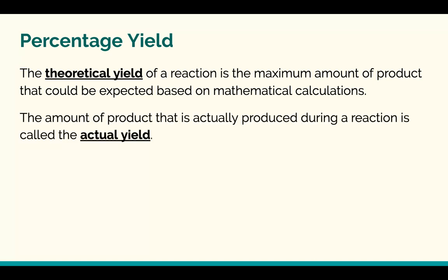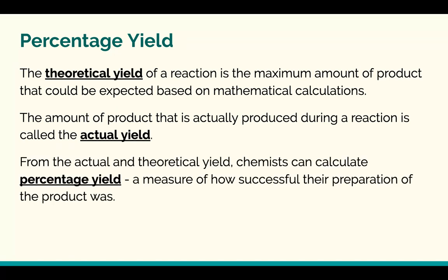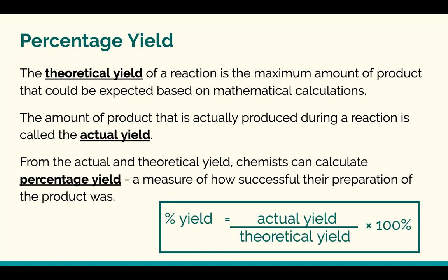Then when you actually do the reaction, you probably are going to get less than that. The amount of product that you actually get is called the actual yield. So from those two yields, you can calculate a percentage yield, which is a measure of how successful the preparation of product was. The formula for percentage yield is your actual yield over your theoretical yield times 100%.